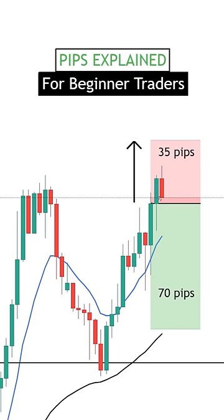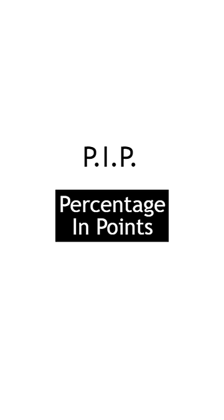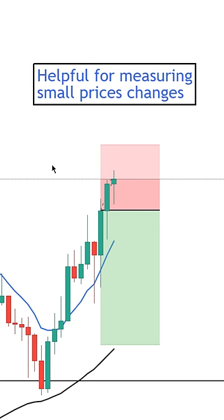So what are pips in the forex market? Well let me explain if you're a beginner. A pip is an acronym that simply stands for percentage in points, and it's a convenient way of allowing us to measure the smallest price changes between different currency pairs.